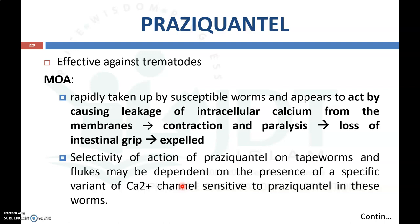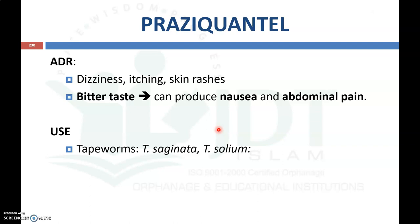Another drug used as an anthelmintic is praziquantel. This is usually active against trematodes. The mechanism of action is that praziquantel is taken up rapidly by susceptible worms and appears to act by causing leakage of intracellular calcium from the membrane. By this leakage of intracellular calcium, it produces contraction and paralysis of different parasites, thereby causing them to lose their intestinal grip and be easily expelled. Important adverse drug reactions are dizziness, itching, skin rashes, and it has a bitter taste, so it may produce nausea and abdominal pain. It can be used for the treatment of tapeworm, Taenia saginata, and Taenia solium.